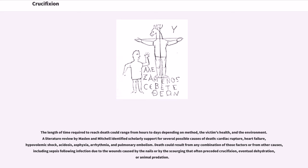The length of time required to reach death could range from hours to days depending on method, the victim's health, and the environment. A literature review by Maslin and Mitchell identified scholarly support for several possible causes of death: cardiac rupture, heart failure, hypovolemic shock, acidosis, asphyxia, arrhythmia, and pulmonary embolism. Death could result from any combination of those factors or from other causes, including sepsis following infection from nail wounds or scourging, eventual dehydration, or animal predation.